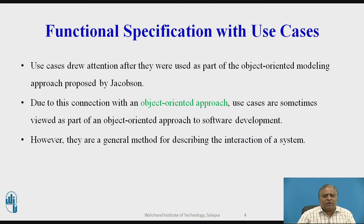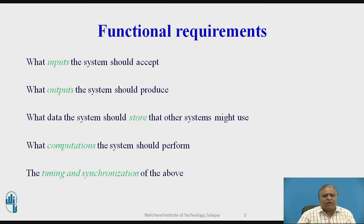How internal and external agents are interacting with the system can be shown using use cases. The functional requirements cover: what inputs the system should accept, what output the system should produce, what data the system should store that other systems might use, what computations the system should perform, and the timing and synchronization of the above. So inputs, outputs, storage, computation, timing and synchronization — these are all the functional requirements.